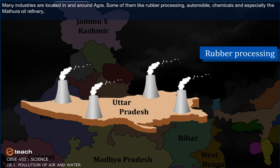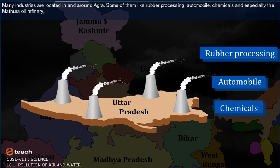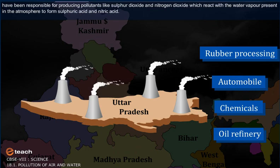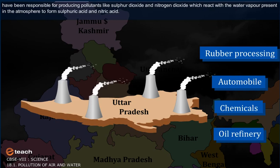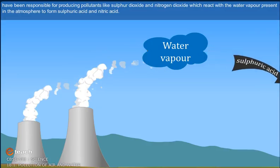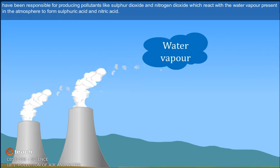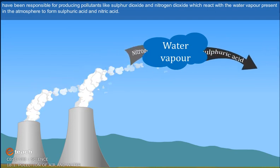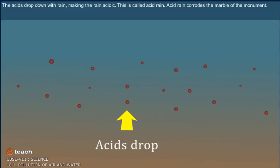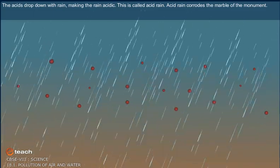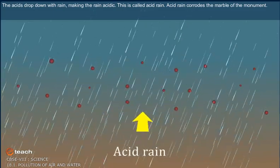Many industries are located in and around Agra — some of them like rubber processing, automobile, chemicals, and especially the Mathura Oil Refinery — have been responsible for producing pollutants like sulfur dioxide and nitrogen dioxide, which react with the water vapor present in the atmosphere to form sulfuric acid and nitric acid. The acids drop down with rain, making the rain acidic. This is called acid rain.